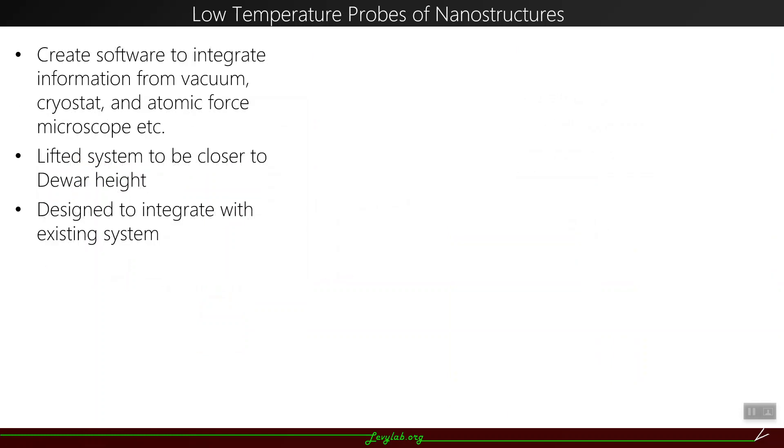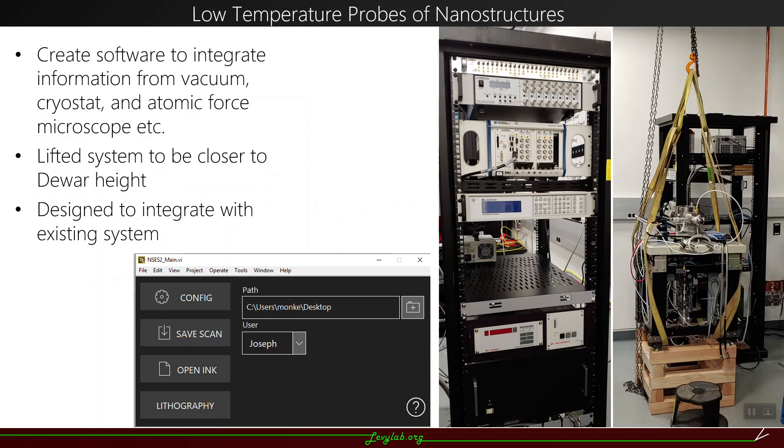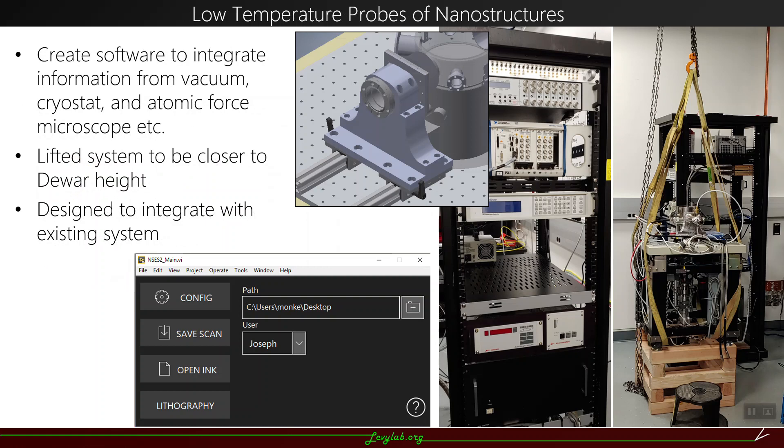I've been creating the low temperature atomic force microscope system. I needed to create software to integrate things like temperature readings, pressure readings, and results from the atomic force microscope. I had the cryostat and microscope lifted using a crane to be closer to the height of the dewars for the helium flow cryostat. I wanted to make sure that everything I designed integrated with the existing system. For example, we use rails that hold the cryostat and slide back and forth so we can integrate with the existing setup for the pulse tube.